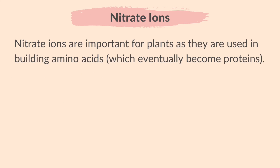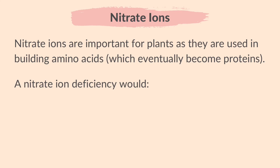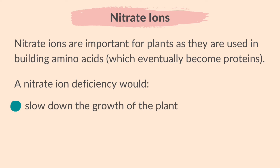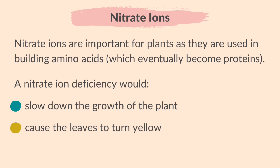Nitrate ions are important for plants as they are used in building amino acids, which eventually become proteins. A nitrate ion deficiency would slow down the growth of the plant — the stem would weaken and the leaves will turn yellow.